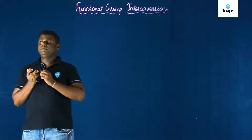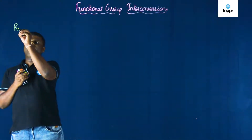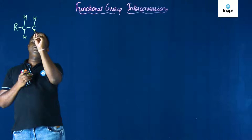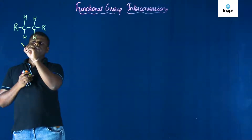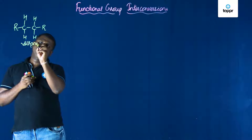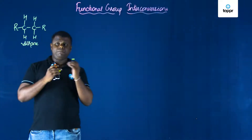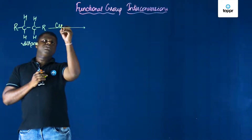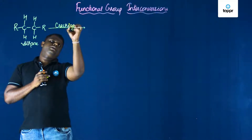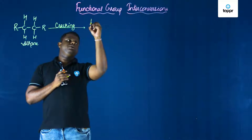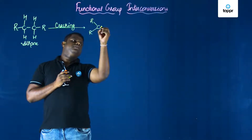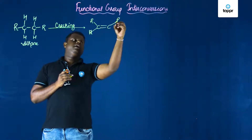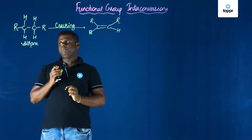Let's start with the first one — it's going to be a good mental exercise. We start with a saturated hydrocarbon, an alkane, written as R-CH₂-CH₂-R. From an alkane, if you remove two hydrogens, the process is called cracking. By cracking, you get an alkene: R-CH=CH-R.